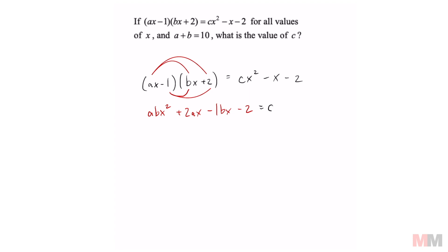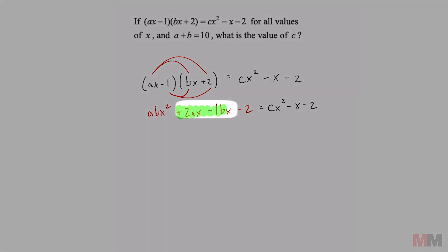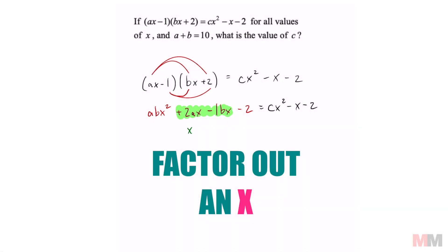That is going to match up with this trinomial on the right side. These two terms in the middle have a common term which is x, so we can factor that out. Factor out a common factor of x and we're left with 2a - 1b on the inside, and let's keep everything else the same.